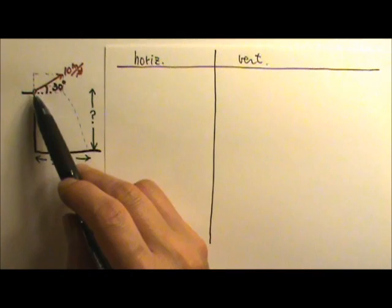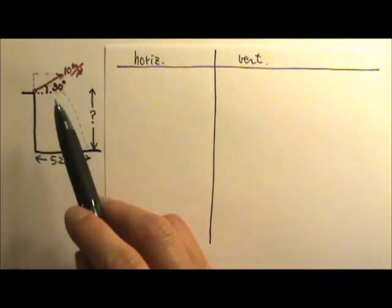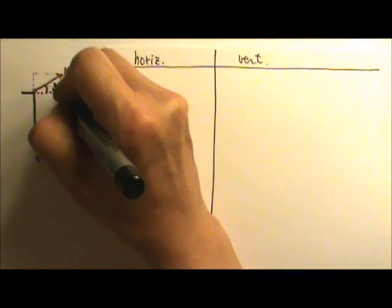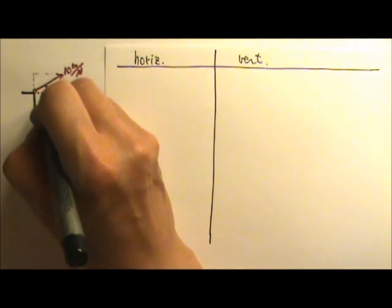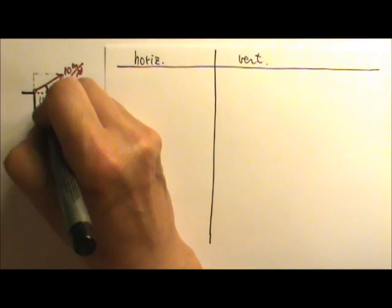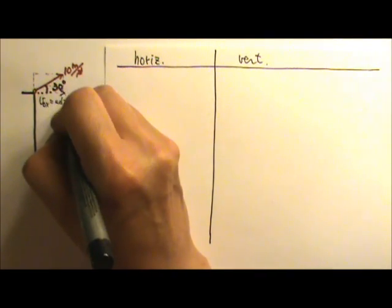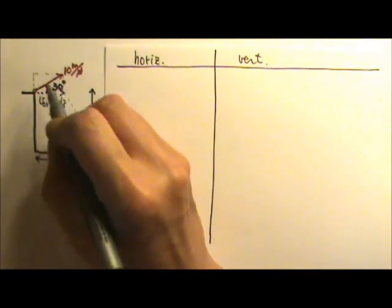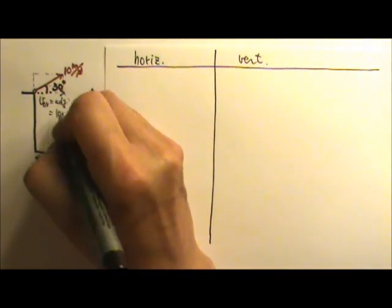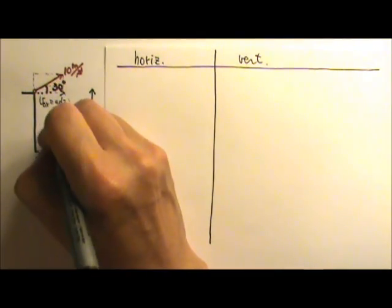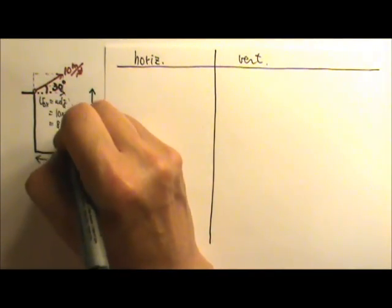So that the slanted 10 meters per second fits exactly in the diagonal of this rectangle. The horizontal component is the VOX, which is adjacent to the angle, so it's the adjacent side, which is the hypotenuse 10 times the cosine 30 degrees, which gives you 8.66.